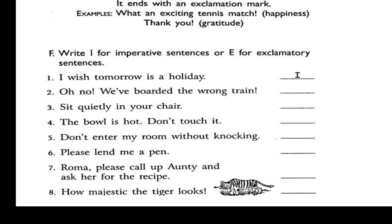As I told you, while studying grammar, practice is really very important. So here comes the practice part. This exercise: write I for imperative sentences or E for exclamatory sentences. The first sentence is already done for you: 'I wish tomorrow is a holiday' — this sentence is an example of an imperative sentence, so the letter I is written for this. The second one: 'Oh no, we have boarded the wrong train' — this is an exclamatory sentence, so write E for this.